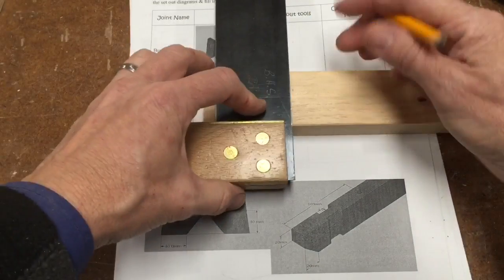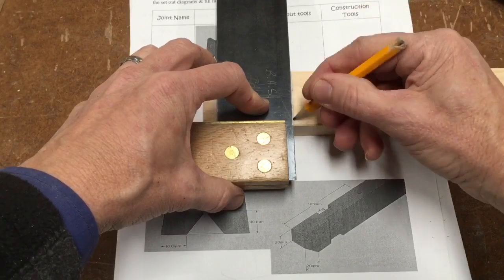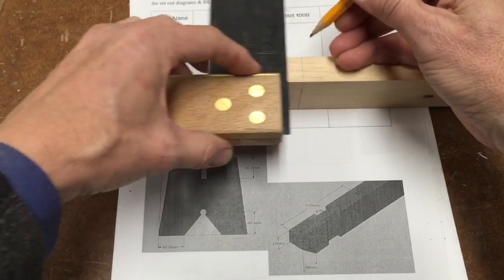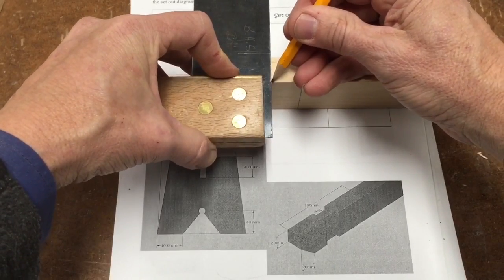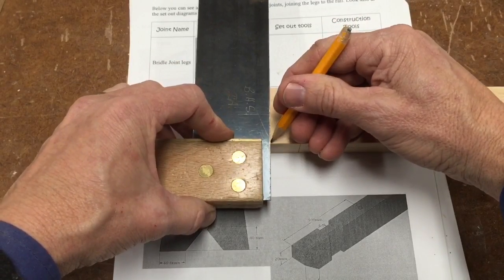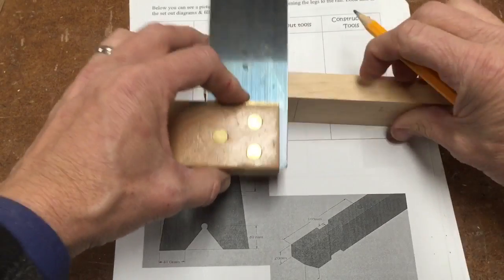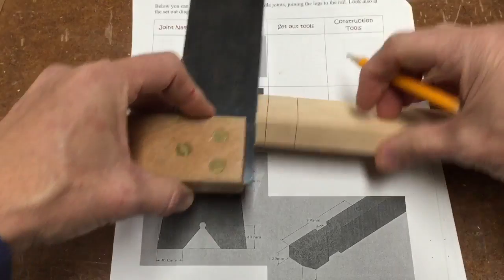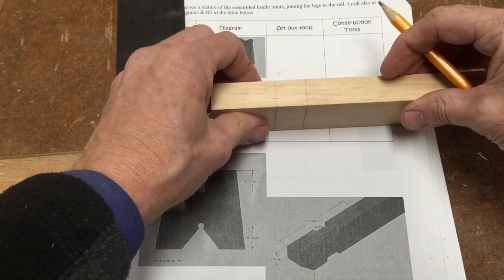I still use my tri-square to square that, and then I want to square these lines all the way around the piece of timber because I need to have my joints on both sides.